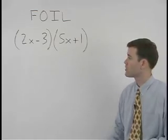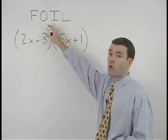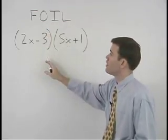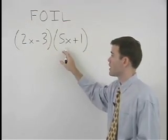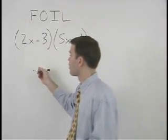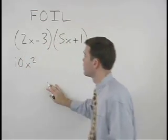So to multiply these two binomials together, let's use the FOIL method. The product of the first terms is 2x times 5x or 10x squared plus the